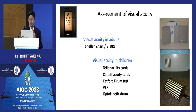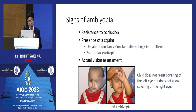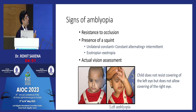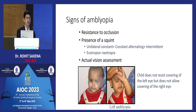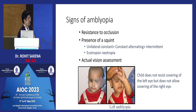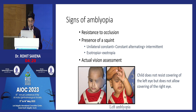Other methods like the optokinetic nystagmus and VER are less accurate. After three or four years, use a tumbling E or letter chart. When visual acuity cannot be collected, it's important to identify signs of amblyopia. The constantly deviating eye is obviously amblyopic. A cover test can confirm: if covering the fixing eye makes the child uncomfortable but covering the deviating eye does not, that eye is amblyopic.